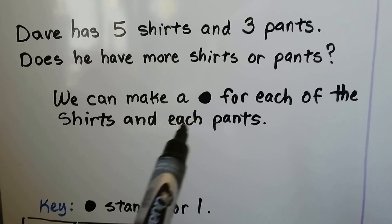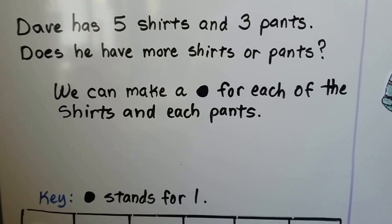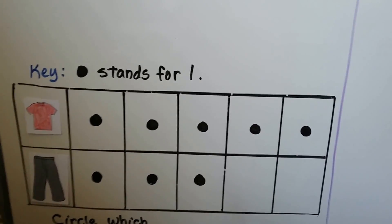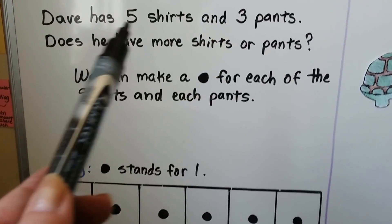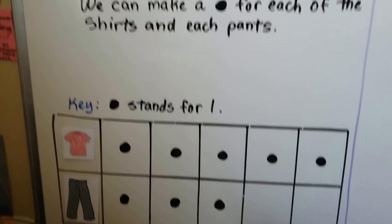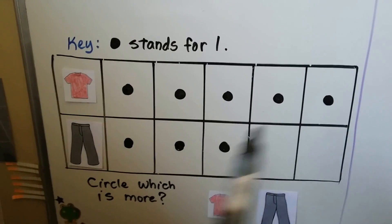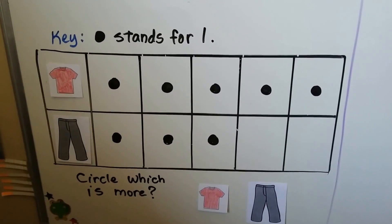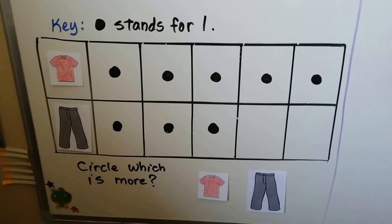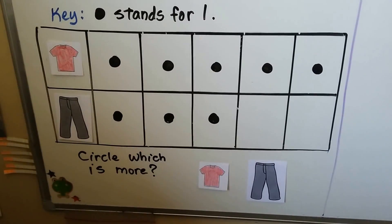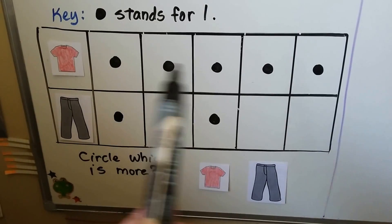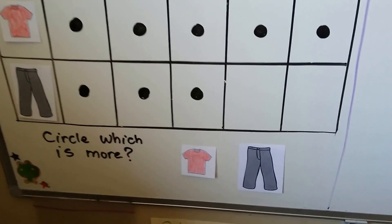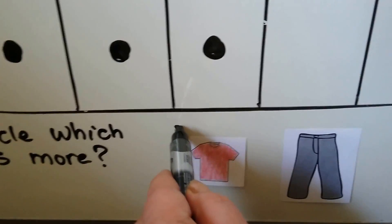We can make a black dot for each of the shirts and each of the pants. So here's our picture graph we made. He has five shirts, three pants. We made five dots for shirts and three dots for pants. We can easily look at the picture graph and tell which one is more. We can see there's more shirts — it has more dots going across its row. We can circle the shirts.